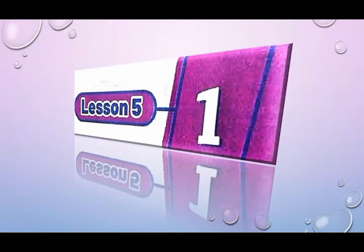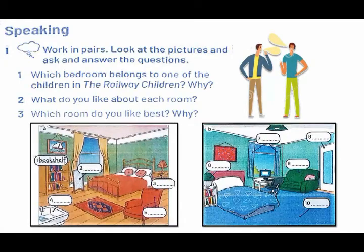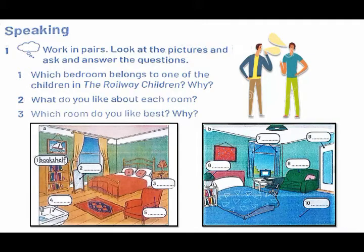Lesson five, unit one, lesson five, starts with a pair work. You have to look at these two pictures with your partner and answer the questions together. The first question: which bedroom belongs to one of the children in The Railway Children story? After you decide, say why. If you have a strong observation, you will notice there is a computer in the picture on the right, so the answer would be the picture on the left. Number two: what do you think about each room? Your opinion. Number three: which room do you like best? Something personal — you can decide yourself. After you say, tell me why.